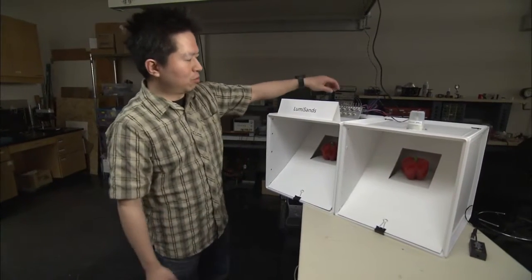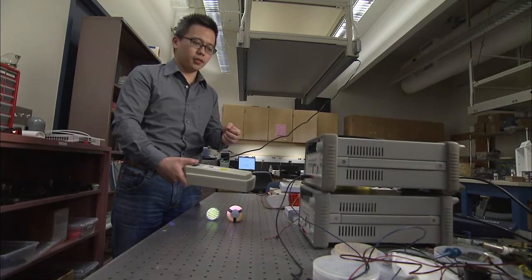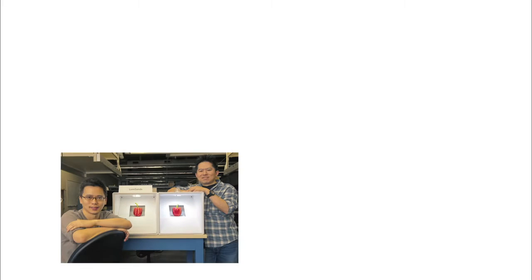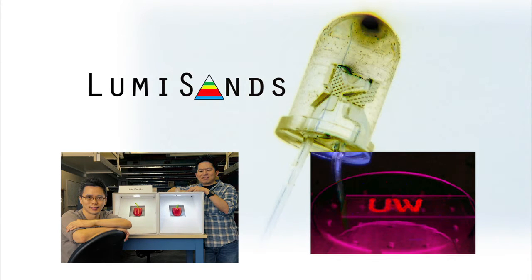Chang Ching Tu and Ji Hu met as graduate students in electrical engineering at the University of Washington. Together, they formed LumiSands, a company that has developed a way to make an important component of an LED in a much better way.